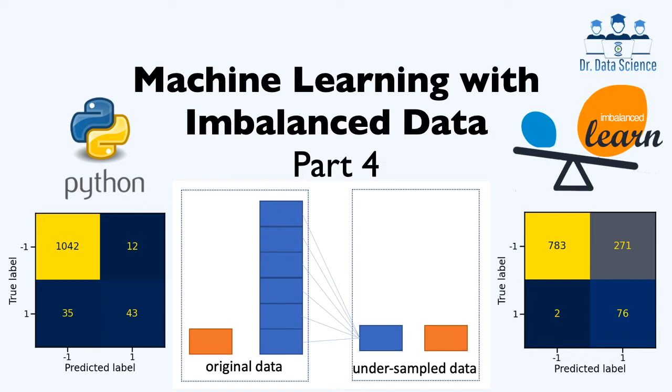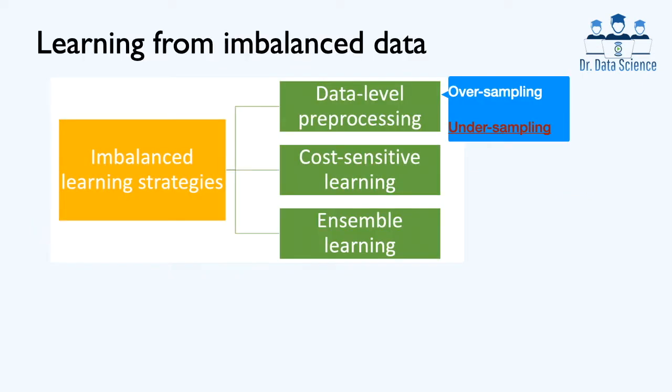In this video we discuss a resampling method known as undersampling for addressing the class imbalance problem. As mentioned before, various strategies to tackle the class imbalance problem can be divided into three main categories. The first one is data-level preprocessing methods, which operate on the training datasets and change class distributions using resampling techniques.